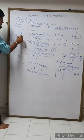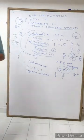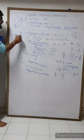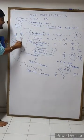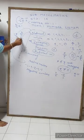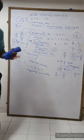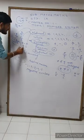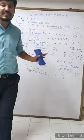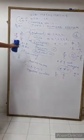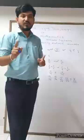Now, is seven by zero a rational number? No, it is not. Why? Because even though we can write it in p by q form and both are integers, q is equal to zero here. The condition is that q should not be zero, but here q is given as zero, so seven by zero is not a rational number.